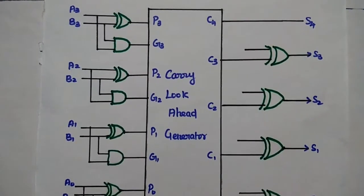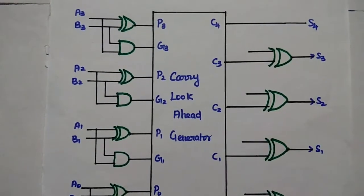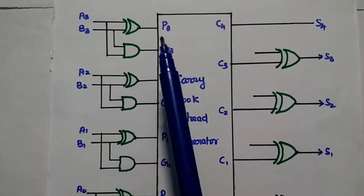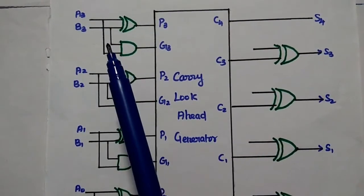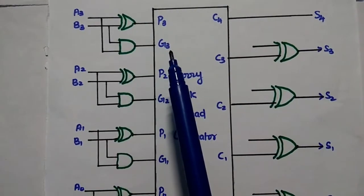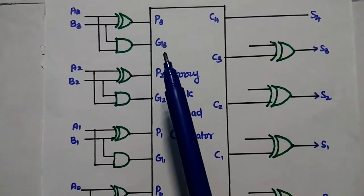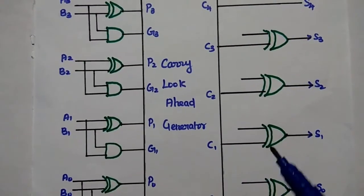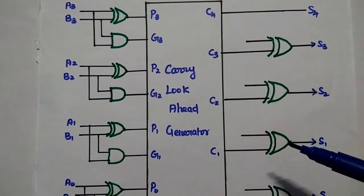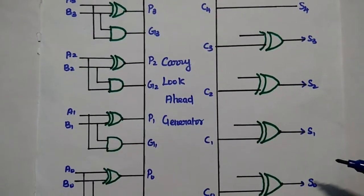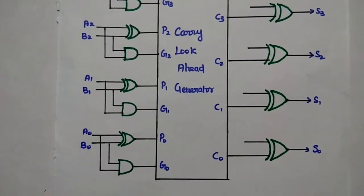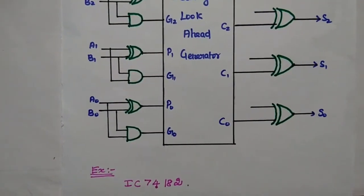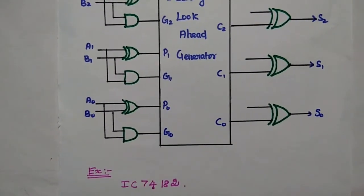This is the diagrammatic representation of the carry lookahead adder. Here A3 and B3 are both given to an XOR gate which generates carry propagate, and both are given to an AND gate to generate carry generation. Carry propagate and carry generate are given as inputs to the carry lookahead generator, which then generates the carries and produces the outputs. This is the diagrammatic representation of the carry lookahead adder. It is also available in integrated circuit chips, IC 74182.